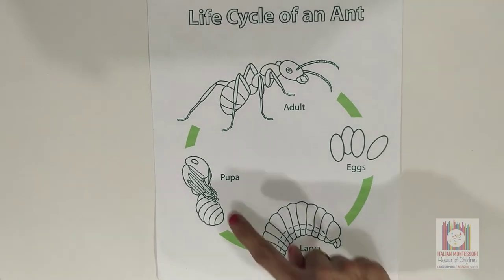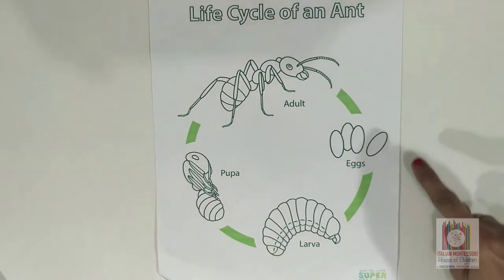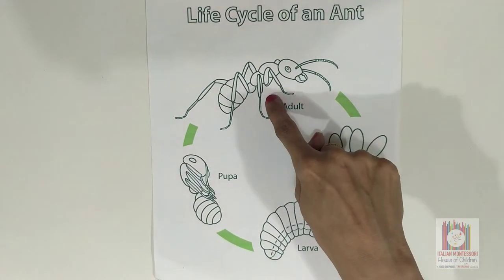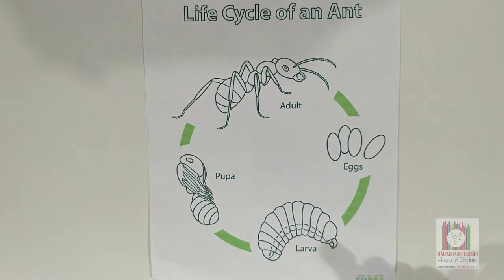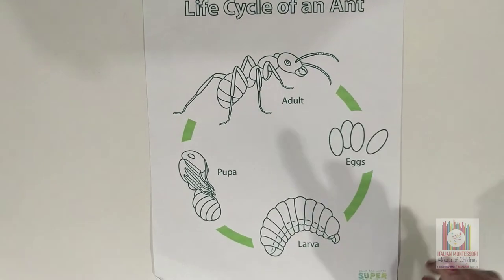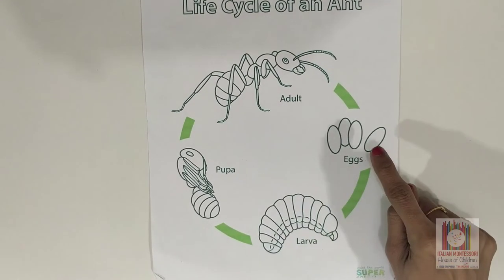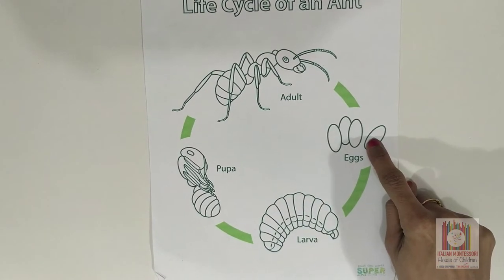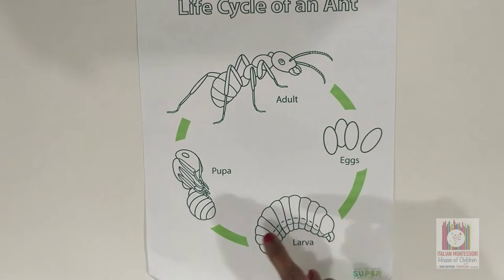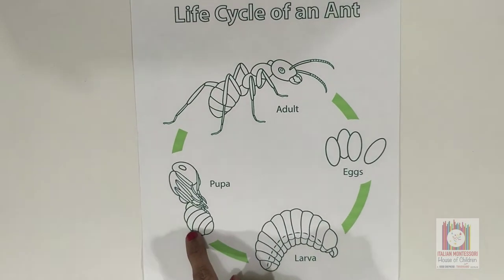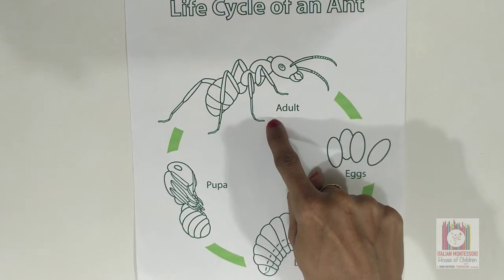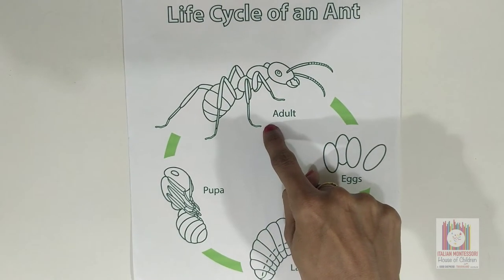Let's see the life cycle of an ant. There are four stages: egg, larva, pupa, and adult ant.